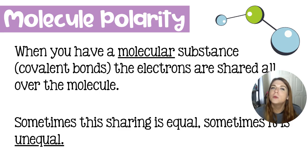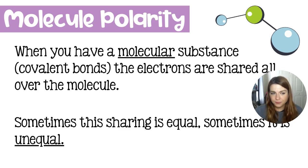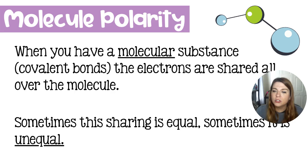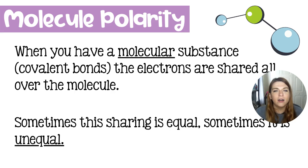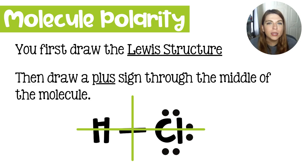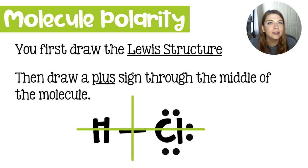When we have a molecular substance or a substance that has covalent bonds, there's a lot of electron sharing. Sometimes the sharing is equal and other times it is unequal. That's all going to be based on the electronegativity of the atoms in the molecule. If we look at a Lewis structure, we can determine if this molecule is balanced, if there's a positive region or a negative region.